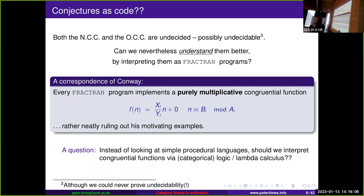Here's a question I'll get into eventually: if instead of trying to interpret things as simple procedural programming languages, will we get any further by trying to look at these in terms of categorical logic and lambda calculus? For congruential functions generally — and in particular the motivating examples — let's look at more general congruential functions.